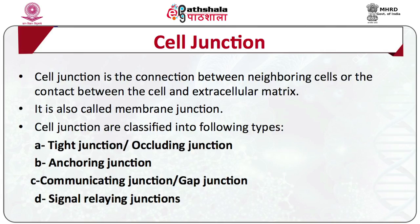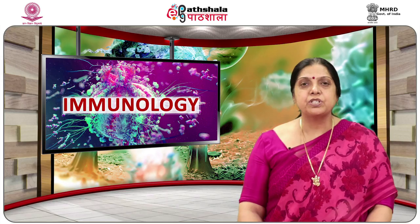A cell junction is a connection between neighboring cells or contact between the cell and the extracellular matrix, called a membrane junction. They are classified into: tight junctions, also known as occluding junctions; anchoring junctions; and communicating junctions, which include gap junctions. There is also another set of signal relaying junctions which include chemical synapses.